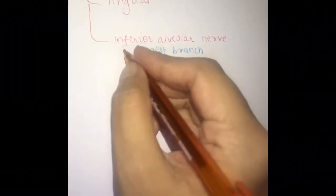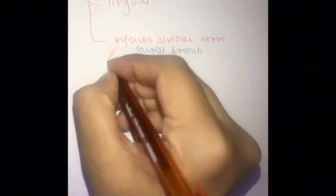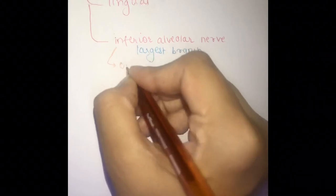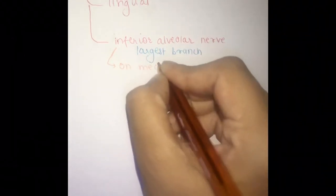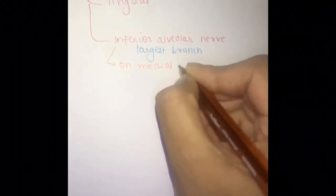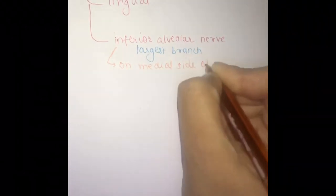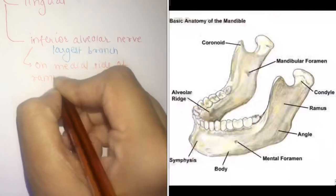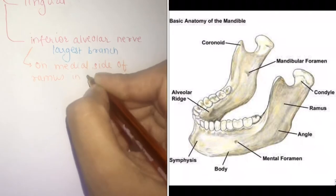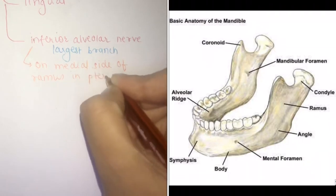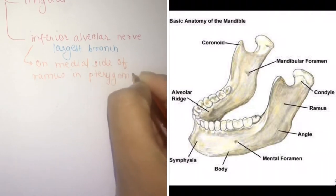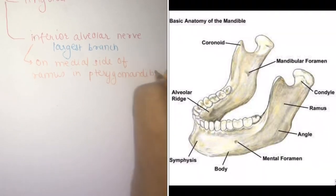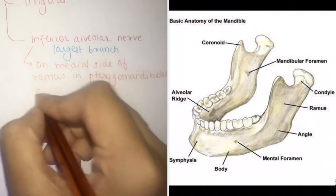The lingual nerve supplies the anterior two-thirds of the tongue and the lingual aspect of all lower teeth. When giving a mandibular block anesthesia, the subjective sign is numbness of the anterior two-thirds of the tongue.